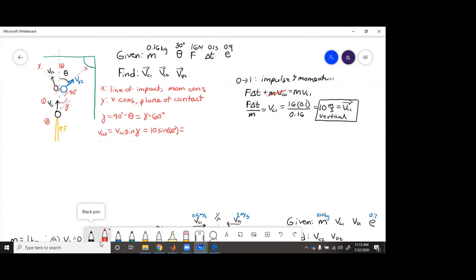And then vc1y equals vc1 cosine gamma equals 10 cosine 60 degrees. So this is 5, this is 8.66.